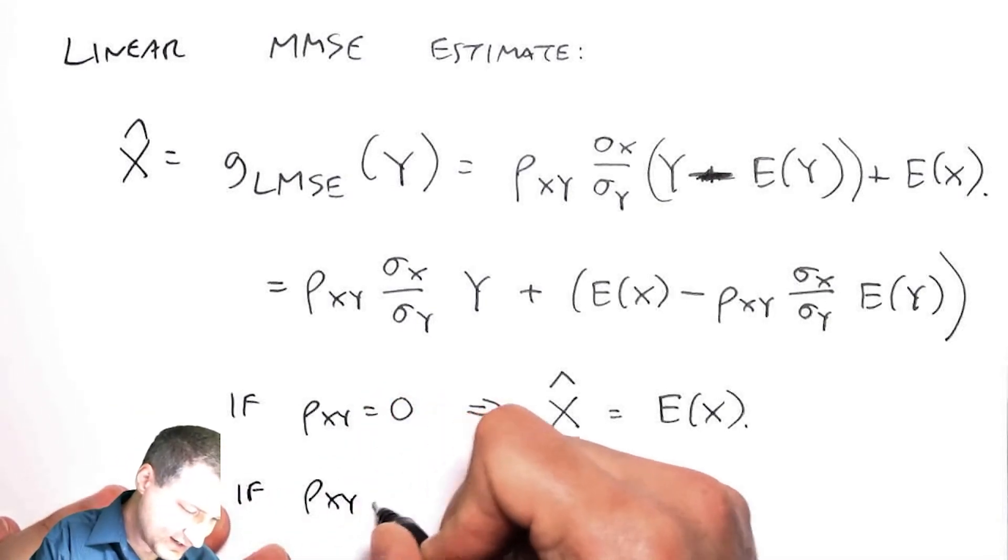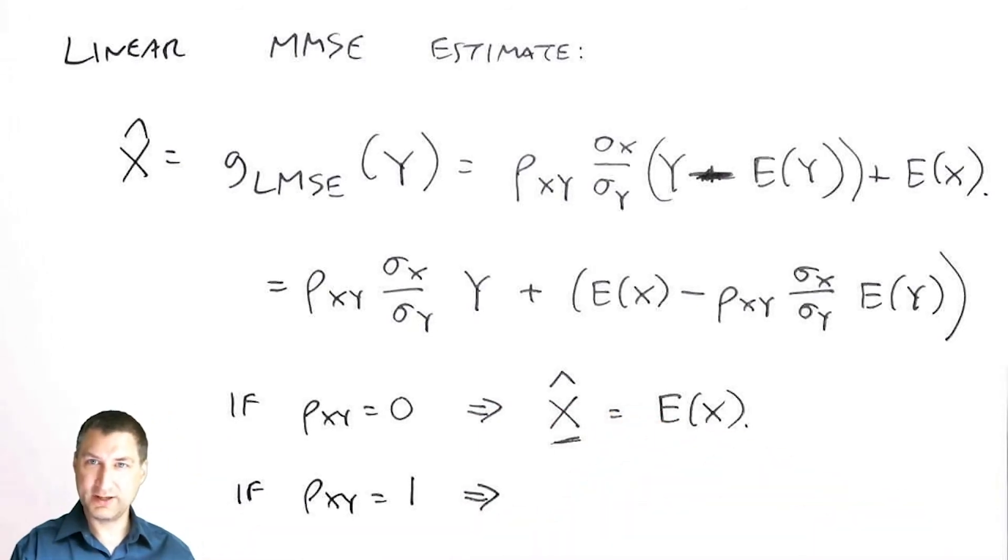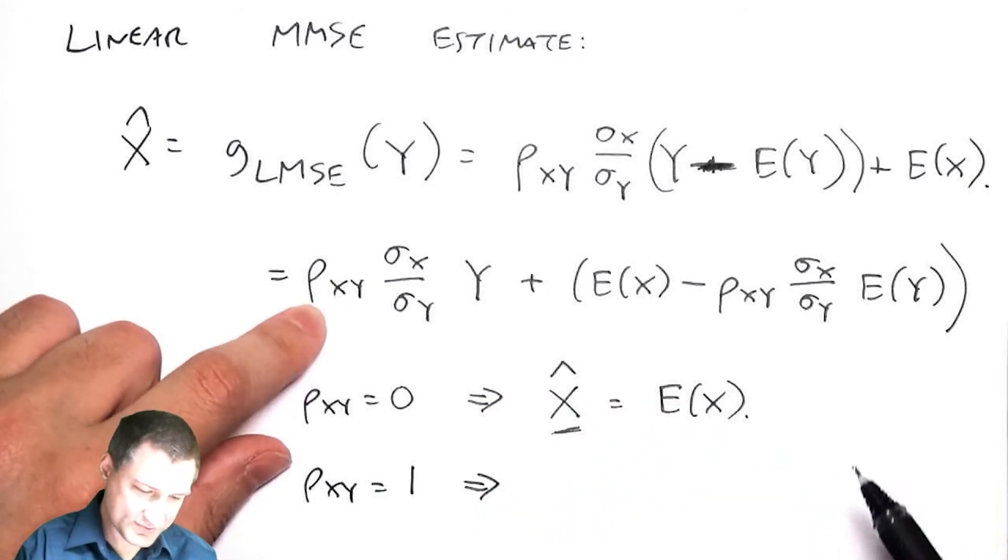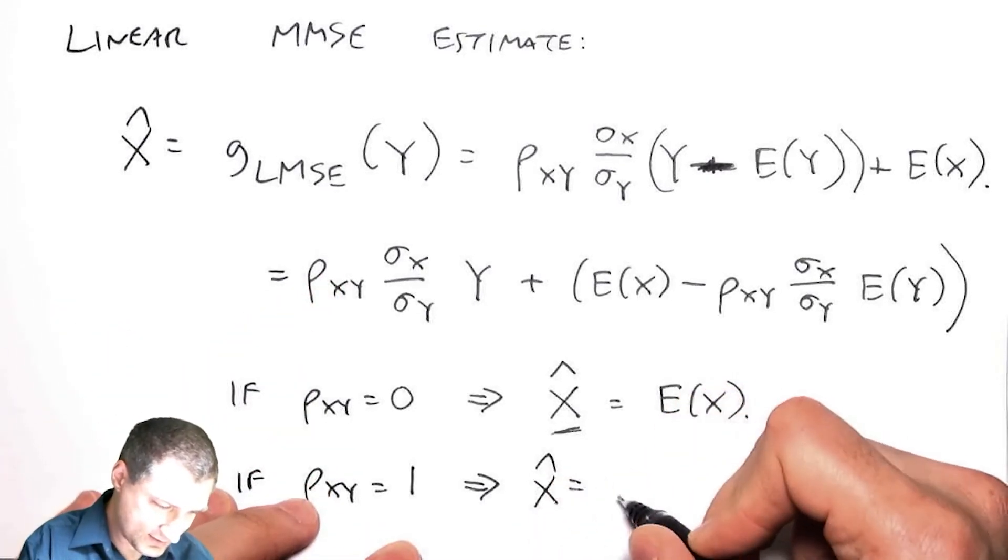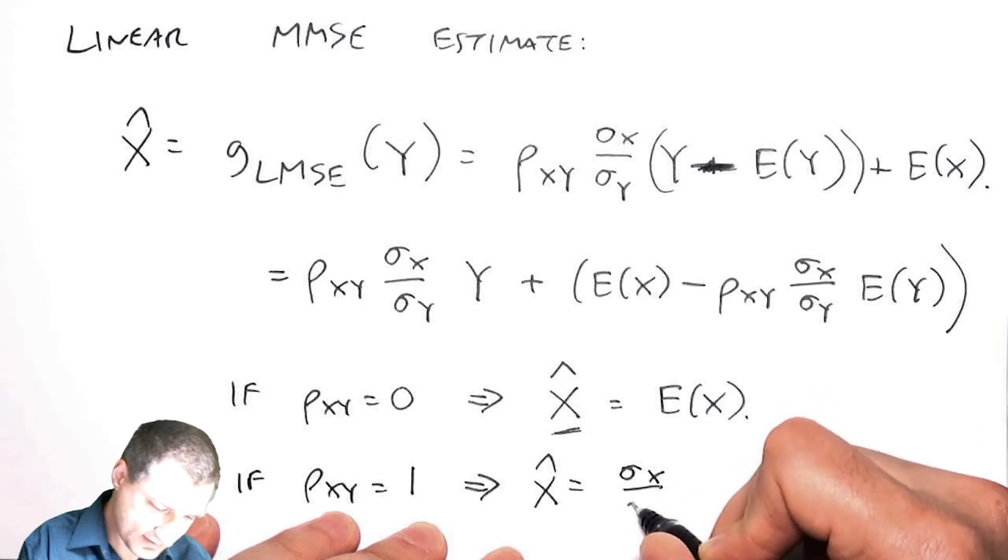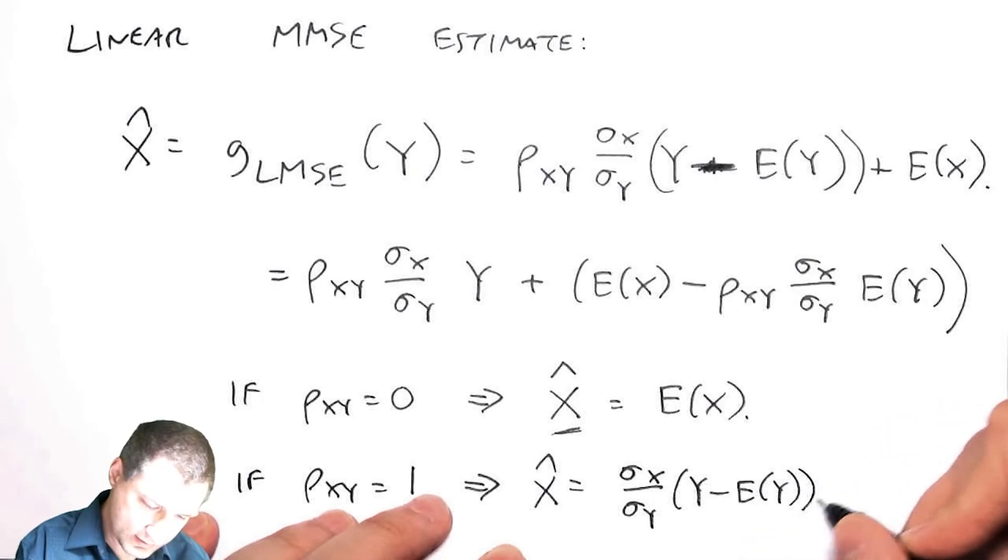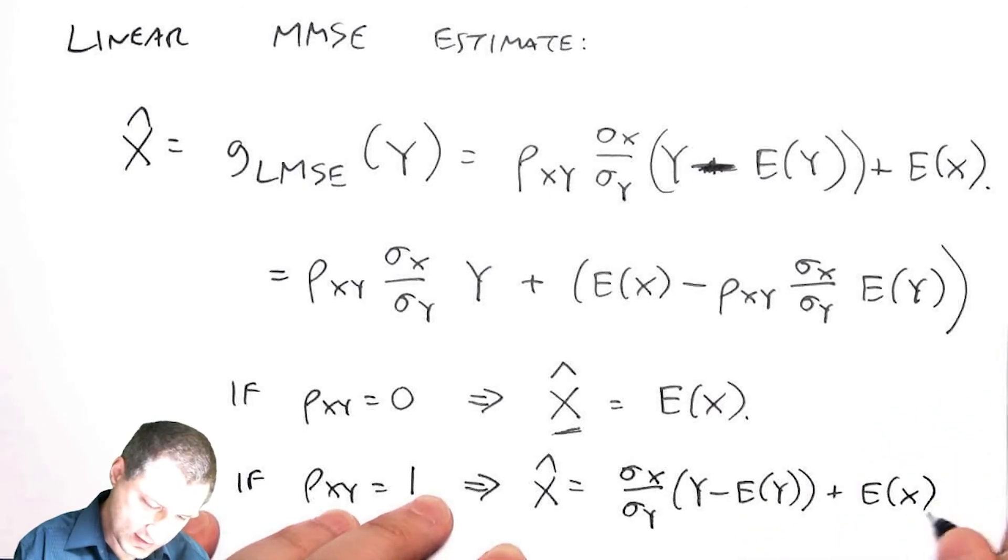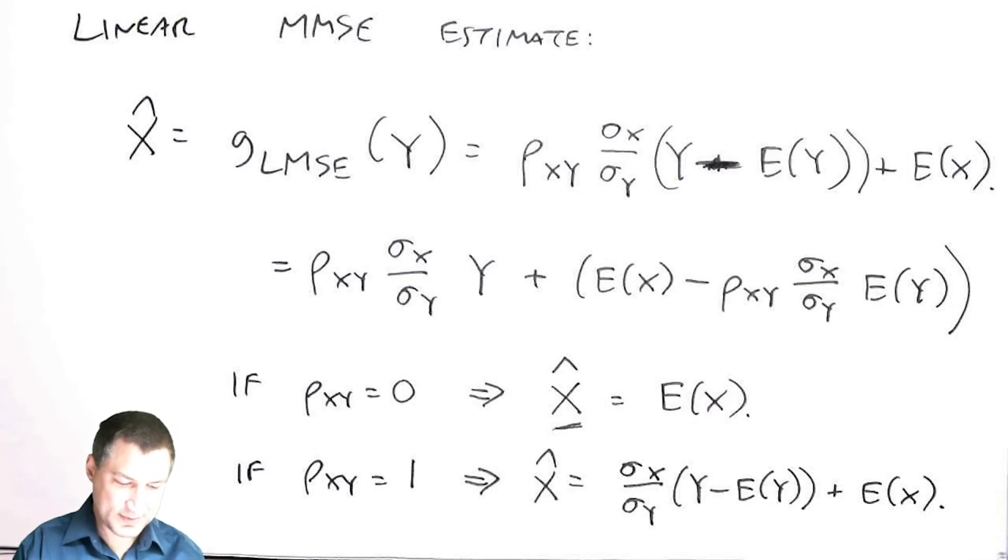Or going the other way, if X and Y are totally correlated, if they have correlation coefficient equal to one, then what happens? Well then I can say that my X̂ is going to be, I'm just going to collect some terms here, (σ_X/σ_Y)(Y - E(Y)) + E(X).